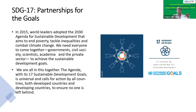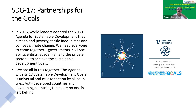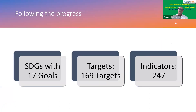SDG 17 is about partnerships for the goals. All goals need partnership among countries. Some countries with very high GDP are very rich, while other underdeveloped countries do not have the economic means to fight these issues. So there is a need for partnership and global cooperation. Global partnership is important.